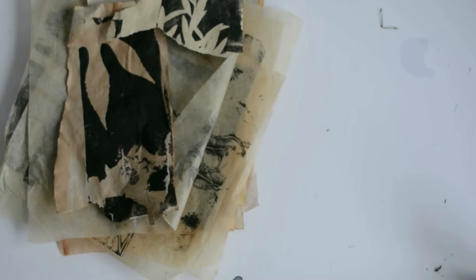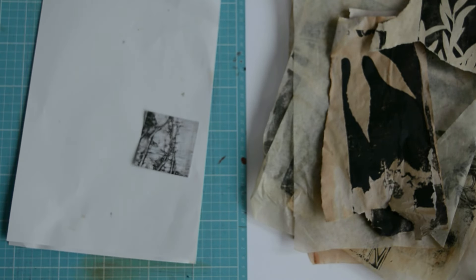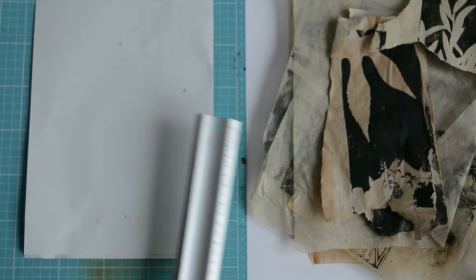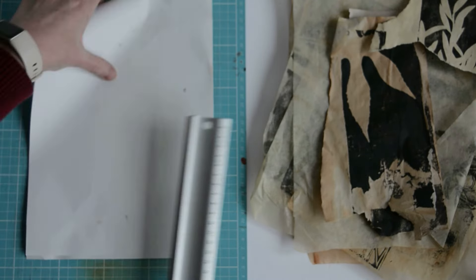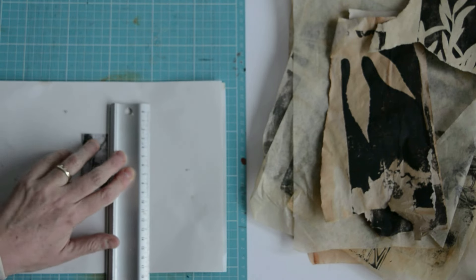Some of these prints are more successful than others, so let's use a viewfinder first of all. We're going to cut the viewfinder out. Now a quilter's ruler is really useful for getting a square. I'm using this particular print I've already done as my guide, but a quilter's ruler will give you a really good 90 degree angle.